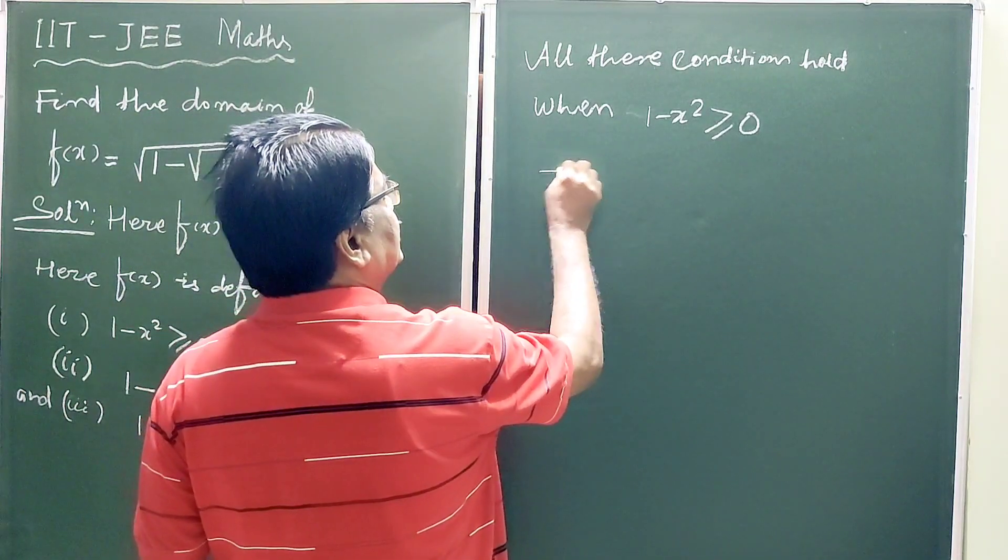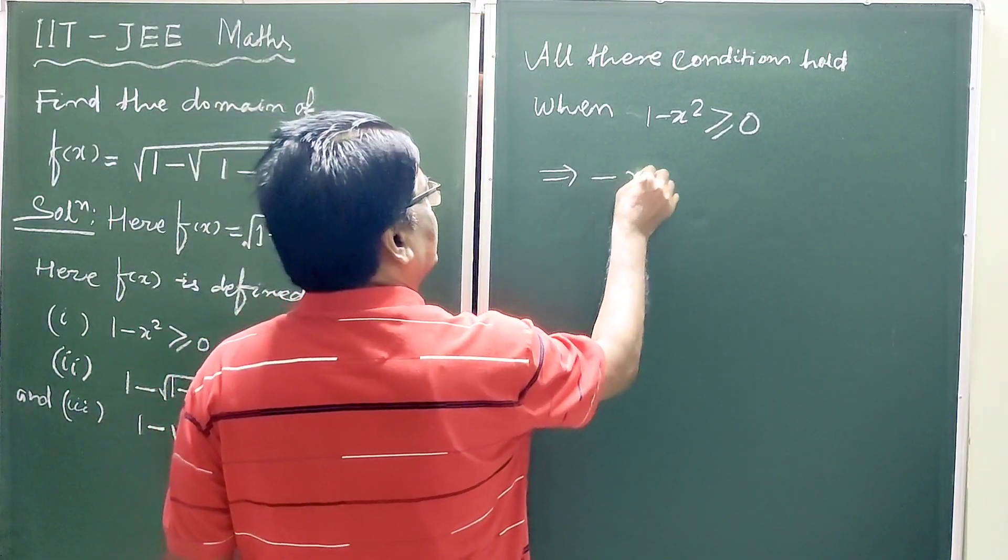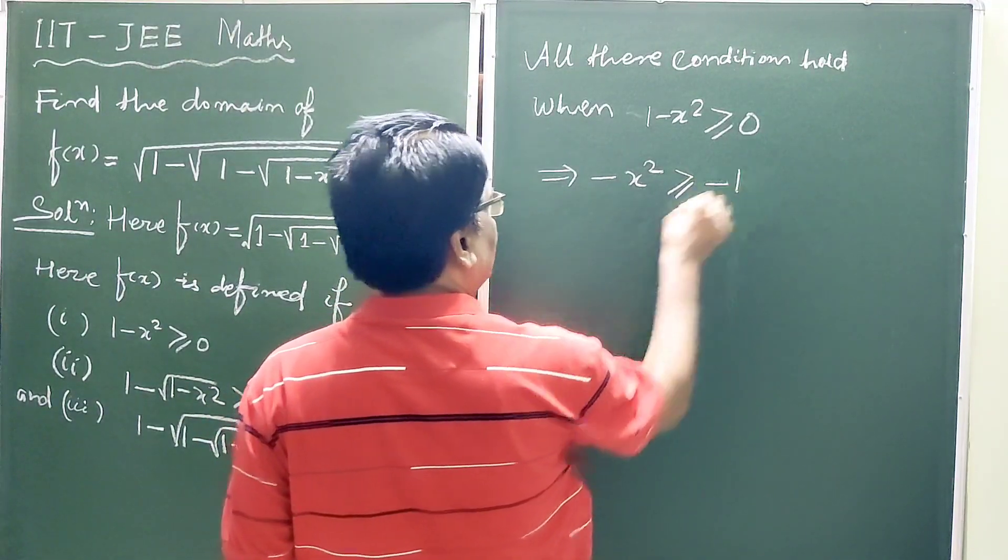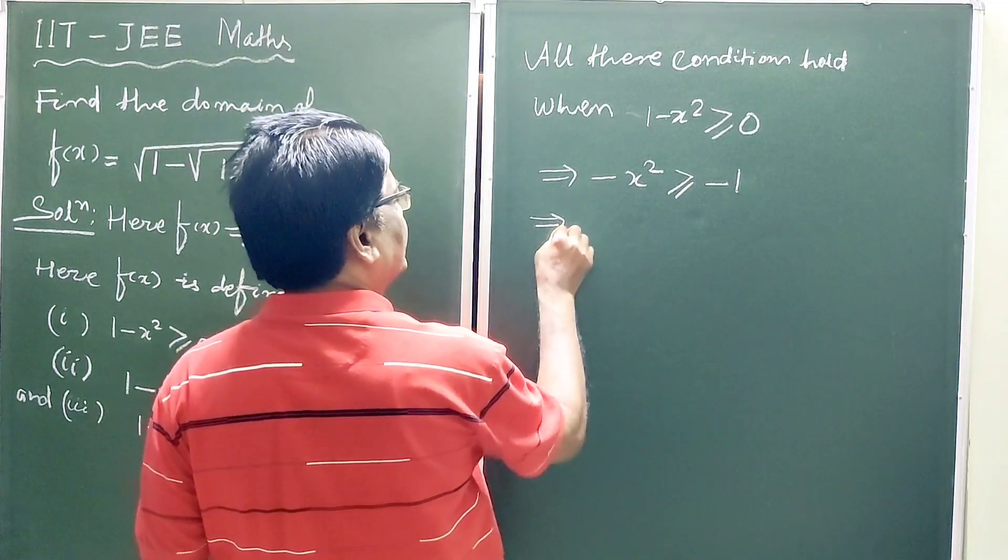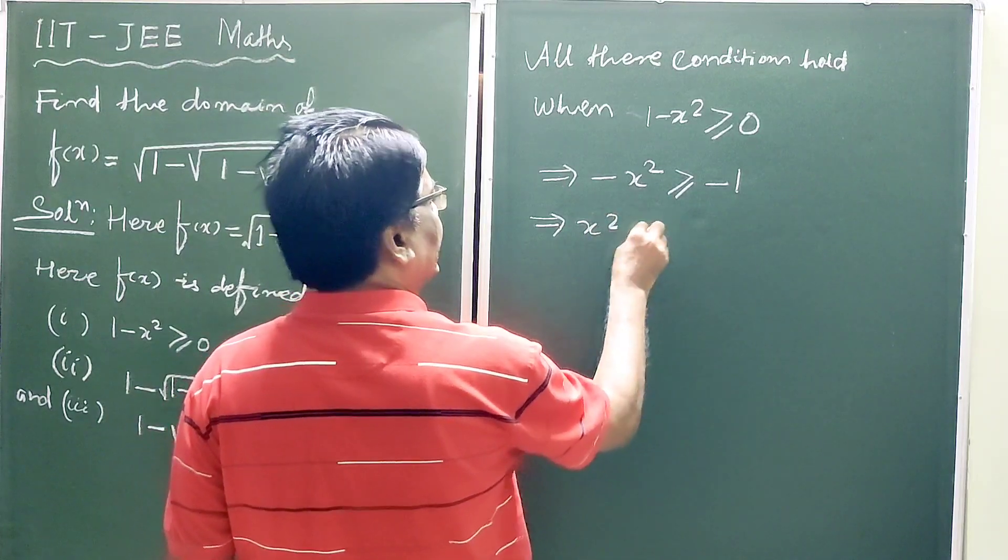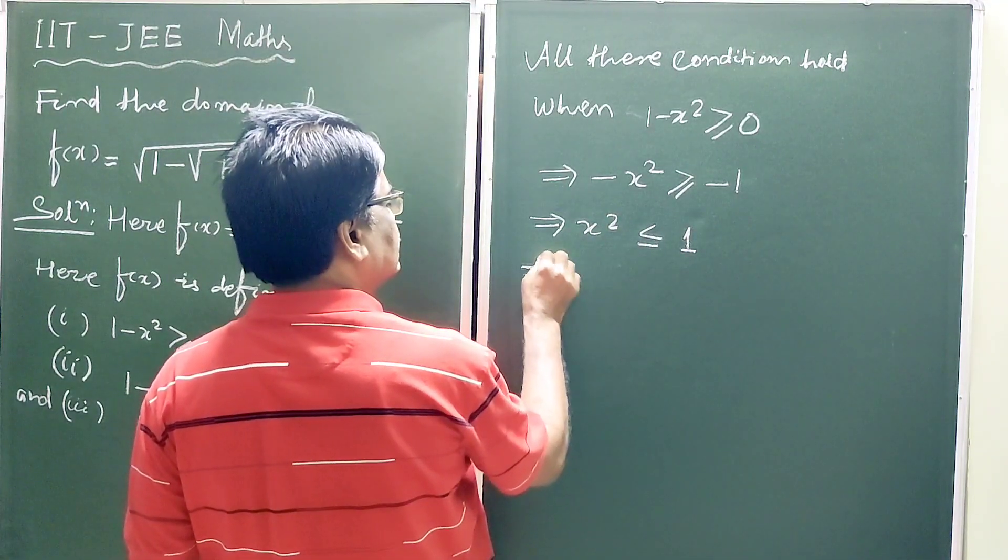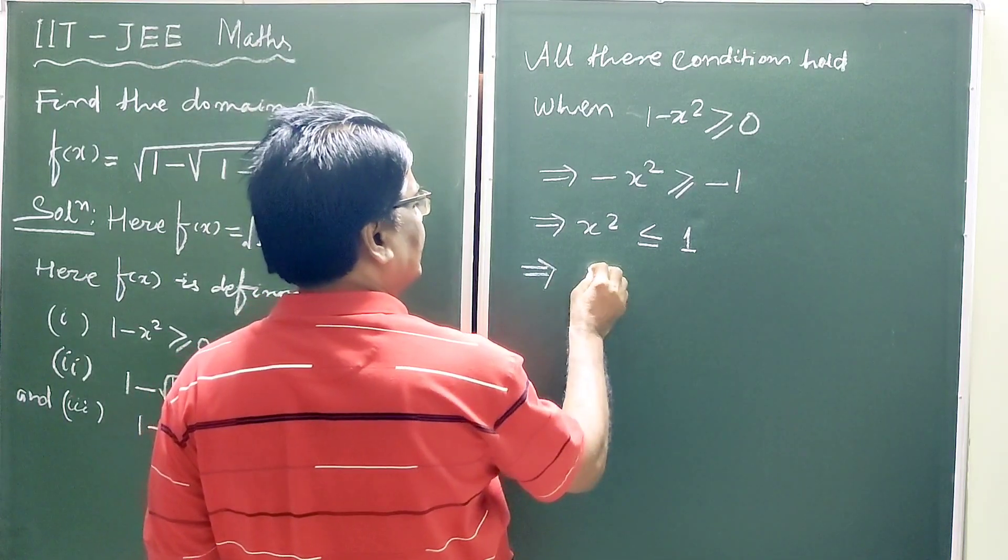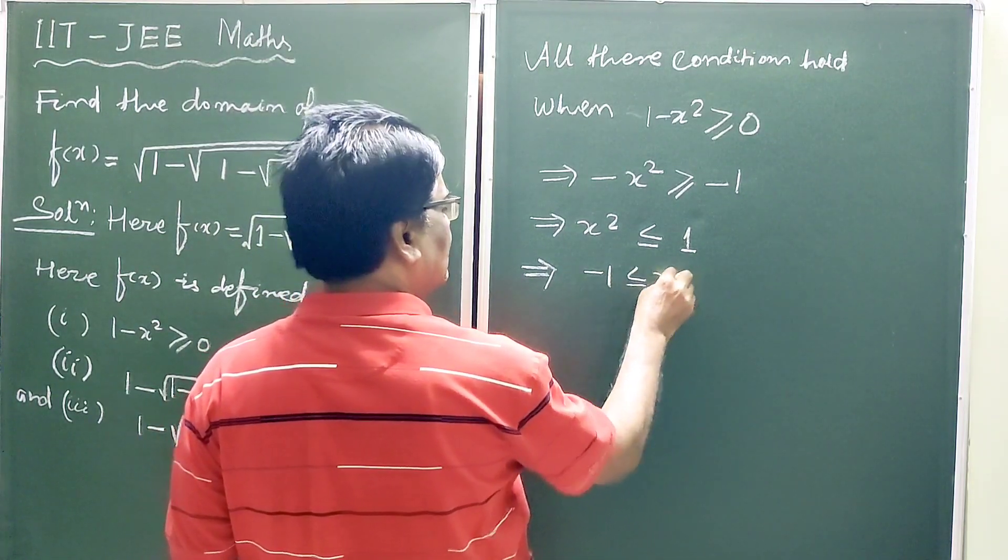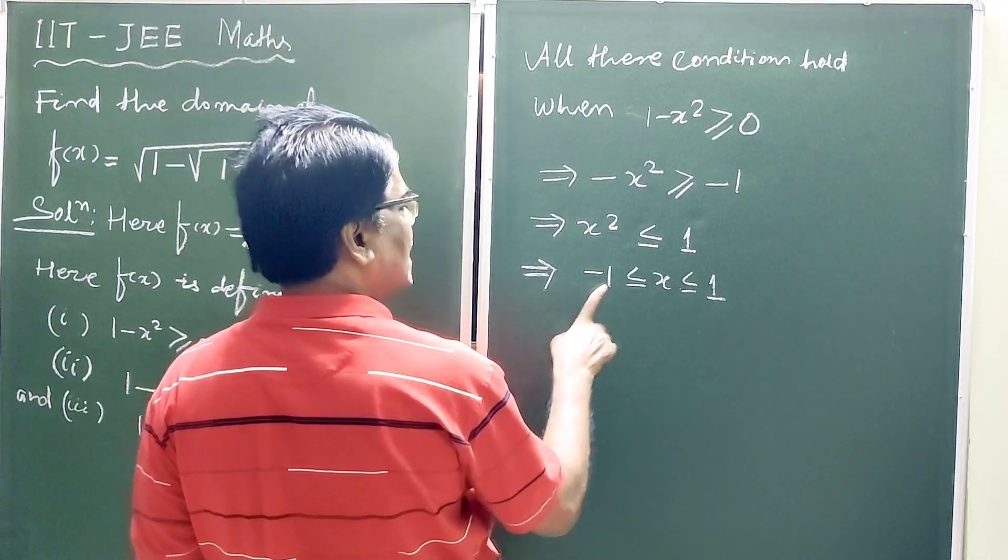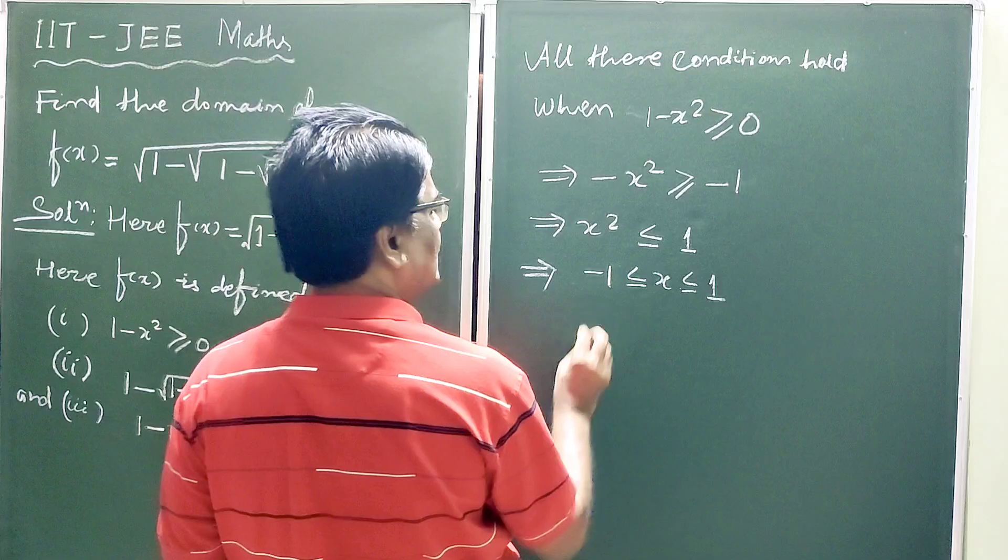So this implies -x² ≥ -1. This implies x² ≤ 1. This implies -1 ≤ x ≤ 1.